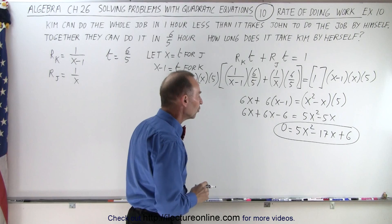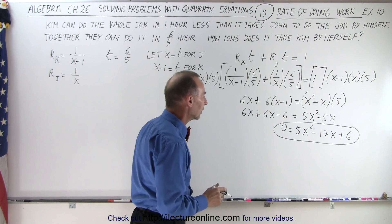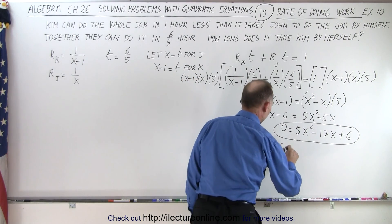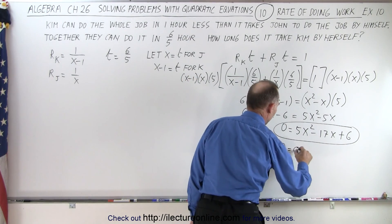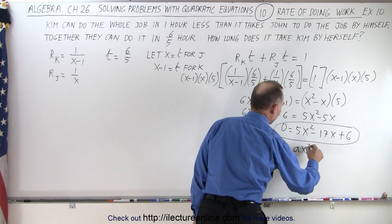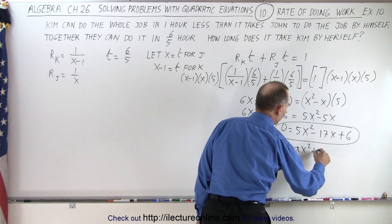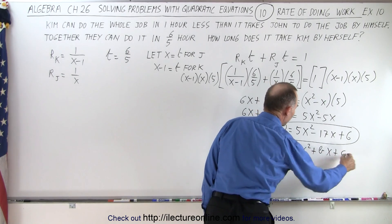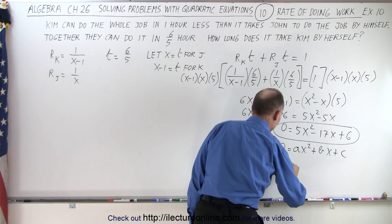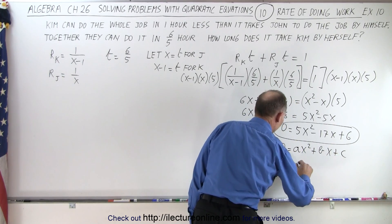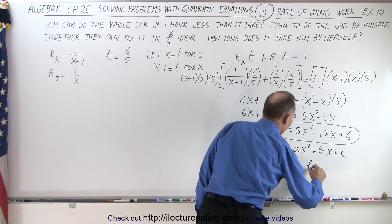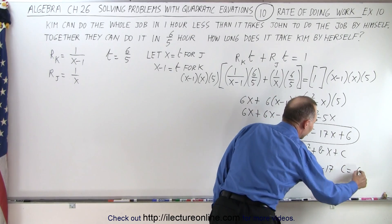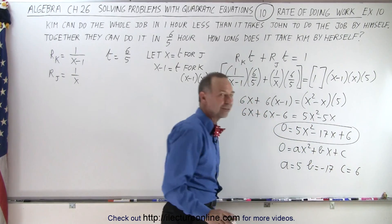Let's go ahead and use the quadratic formula. This is zero equals ax squared plus bx plus c, where a is equal to five, b is equal to minus 17, and c is equal to six.